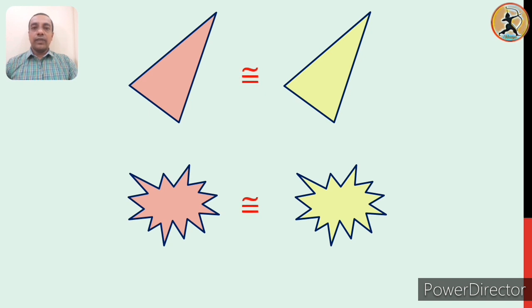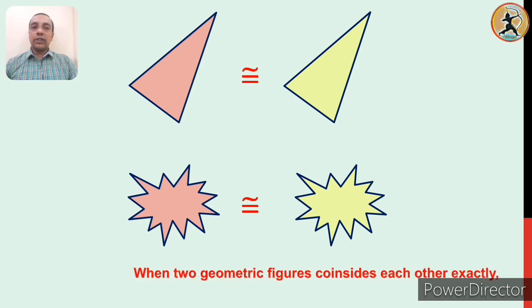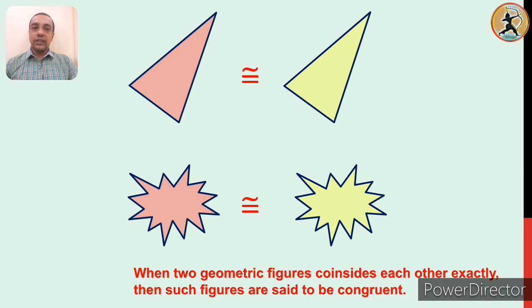These two figures are said to be congruent figures, indicated by the congruency sign on the screen. The definition of congruent figures: if any two geometrical figures coincide each other exactly, such two figures are said to be congruent figures. Now, there are two triangles — can we say that each and every part of the first triangle is congruent to each and every part of the second triangle? That means each angle and each side.